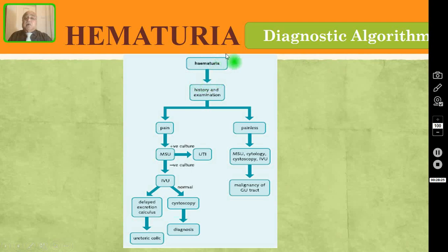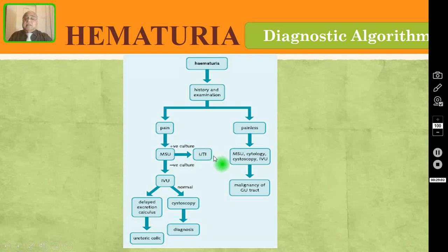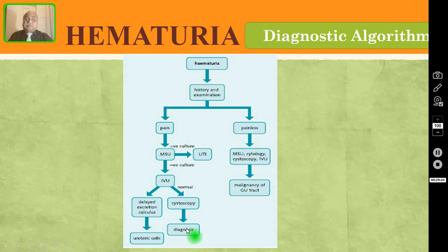This is the diagnostic algorithm for hematuria. You must do a thorough history and physical examination. If it is painless haematuria, examine midstream urine, do cytology, cystoscopy, and IVU — most painless haematuria cases can pick up malignancy anywhere in the urinary tract, either in the kidney or bladder. If it is painful haematuria, examine midstream urine — if positive for culture, the cause is UTI; if negative, do IV urogram. If there is delayed excretion of dye, the cause is ureteric calculus. If IVU is normal, do cystoscopy to find calculus or tumour in the bladder or pathology in the prostate.